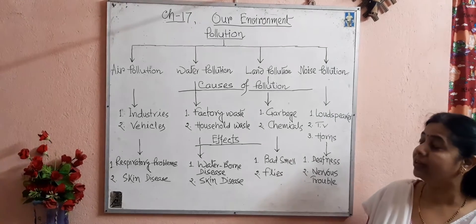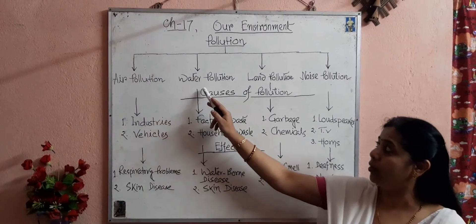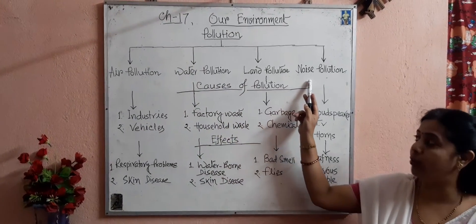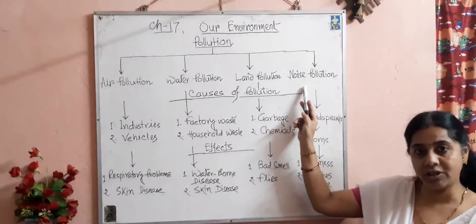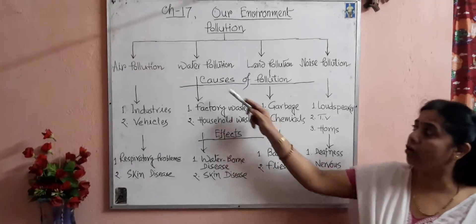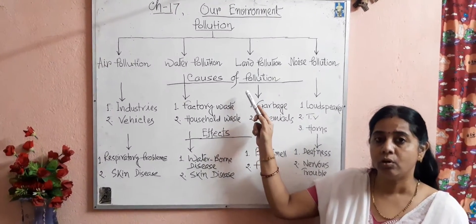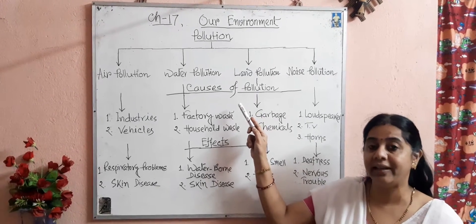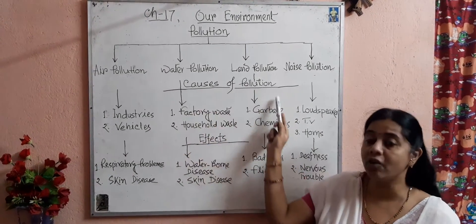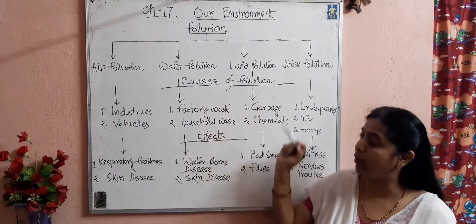The different types of pollution are air pollution, water pollution, land pollution, and noise pollution. Now let us see what are the causes of pollution — what are the pollutants that cause these different types of pollution?